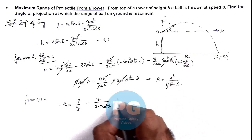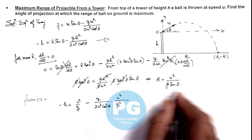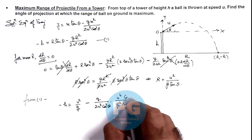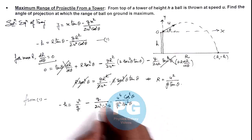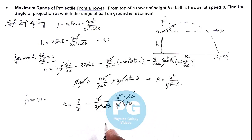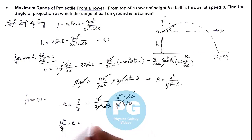After squaring and substituting, one g cancels, cos²θ cancels, and one u² cancels. The result after simplification is: (u²/g) − h = u²/(2g·sin²θ).